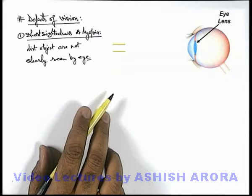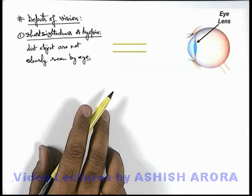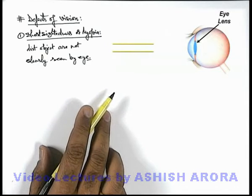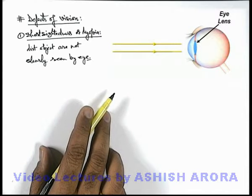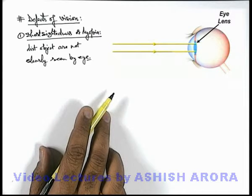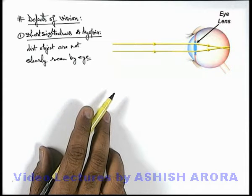When parallel light rays from a far away object are incident on the eye lens, it converges the rays at a point in front of the retina. In other words, the eye lens is not able to produce a sharp image on the retina.